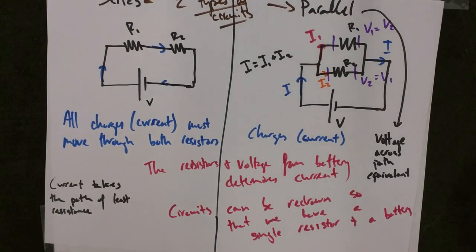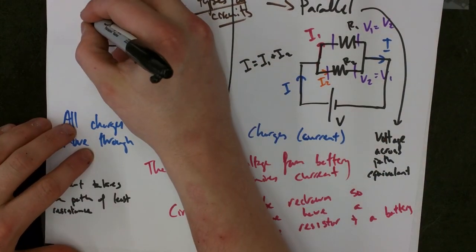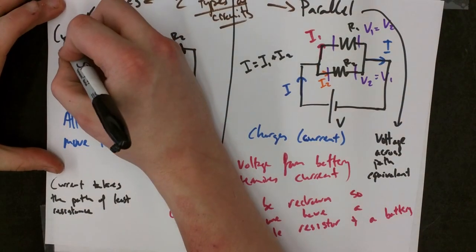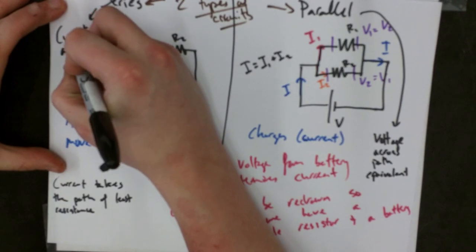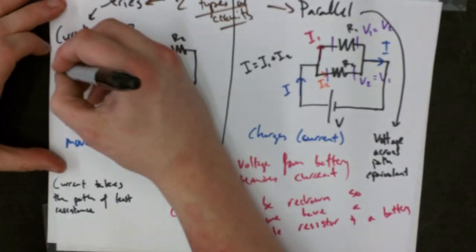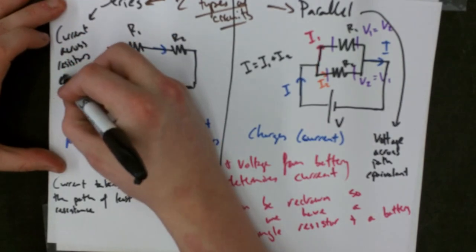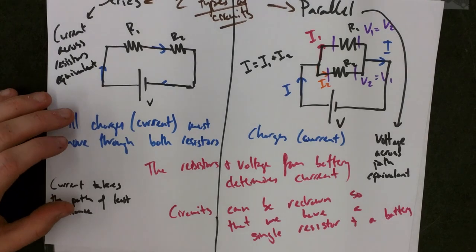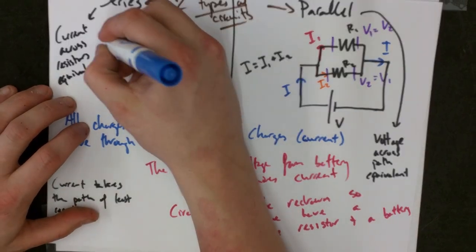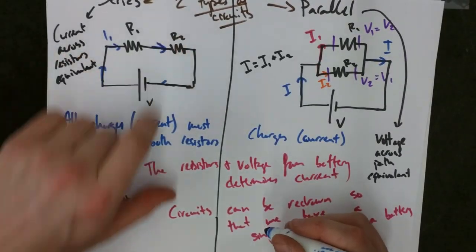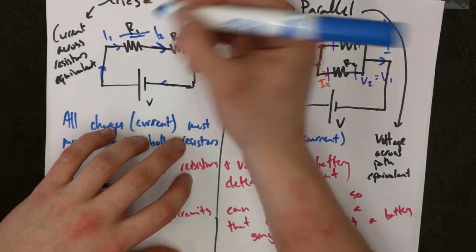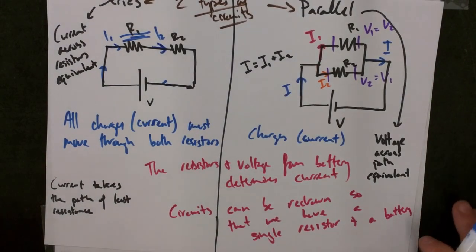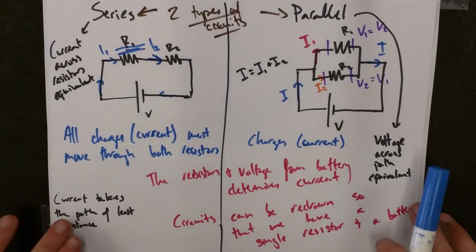In a series circuit, it's the current across the path that's equivalent. Current across path or across resistors equivalent. So the current here, I1, is the same current here going through I2. And these two are equal to each other. That's a very long equal sign. Okay. That's it for now.